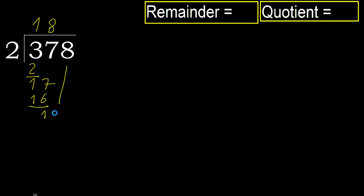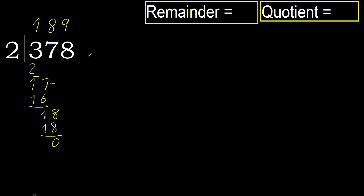Next: 18. 2 multiplied by 9 is 18 — ok, is not greater. Subtract: 18 minus 18 is 0. Next digit — there is none, therefore finish.